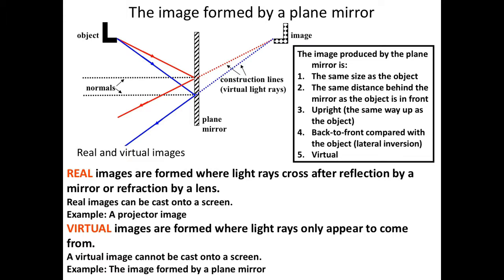Next we look at how images are formed by a plane mirror. An object casts rays that reflect off the mirror; by extrapolating the reflected lines back into the mirror, we find where the image appears — these are construction lines. The image formed by a plane mirror is the same size as the object, the same distance behind the mirror as the object is in front, upright (not inverted vertically), laterally inverted (back to front), and virtual — it doesn't really exist and can't be projected onto a screen, but you can see it inside the mirror.